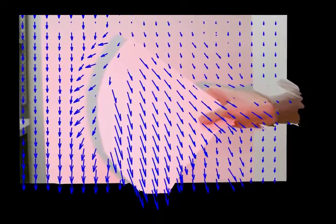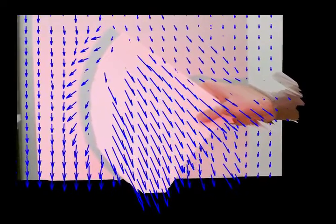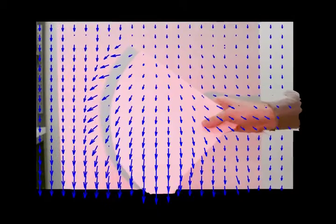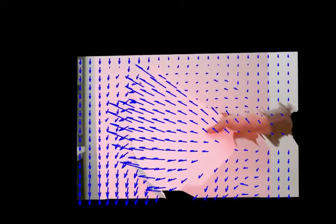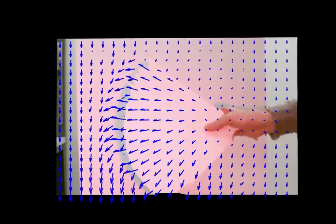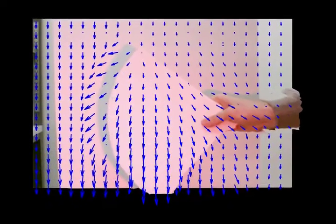Combining the 2D optical flow estimated from the color images and the metric axial velocity measured with our technique allows us to compute the metric 3D velocity field of the scene. This imaging mode has important applications for the navigation of unmanned autonomous vehicles, such as self-driving cars and drones.